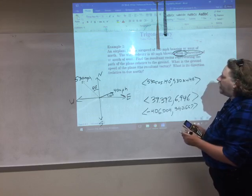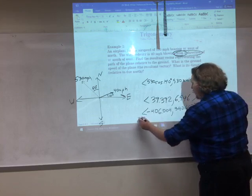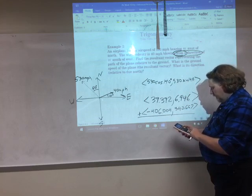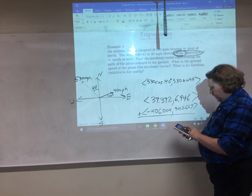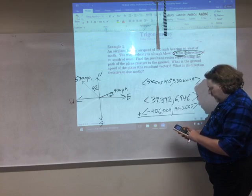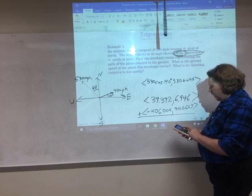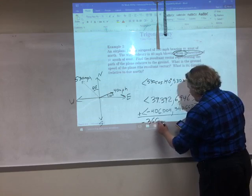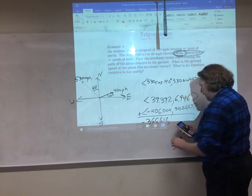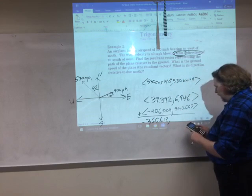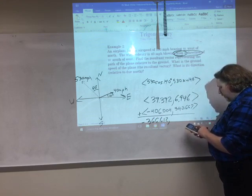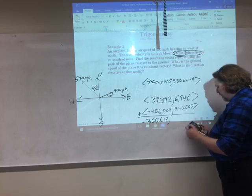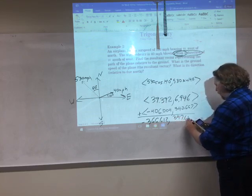And so now I'm going to go ahead and add those up to get the overall result. So, 39.392 plus negative 406.004 gives me negative 366.612. And now the y component, adding those up, I have 6.946 add 340.667 gives me 347.613.